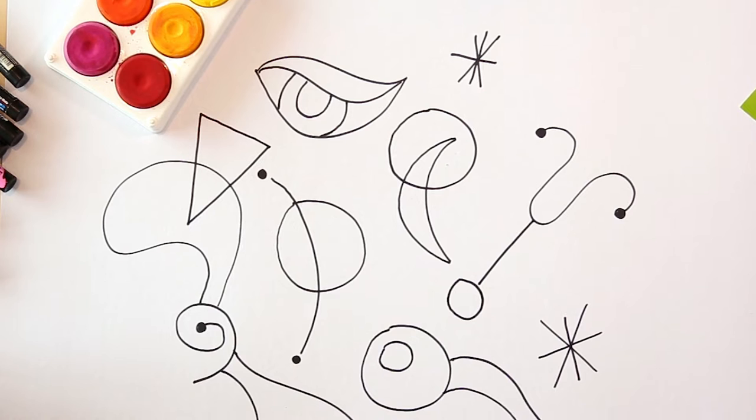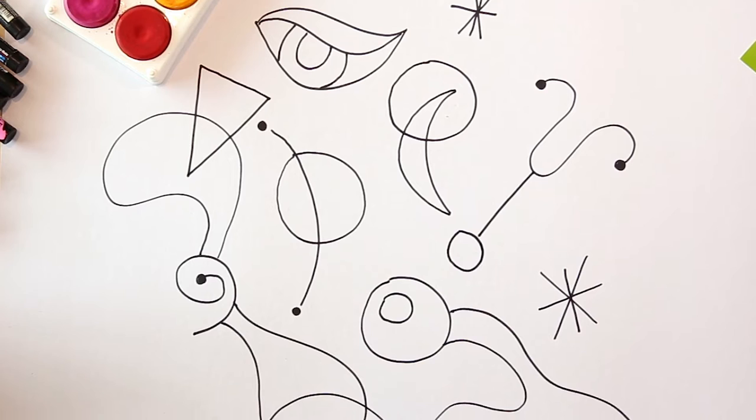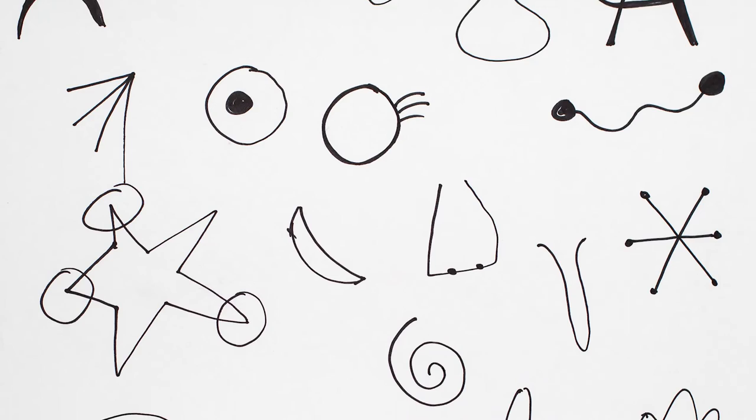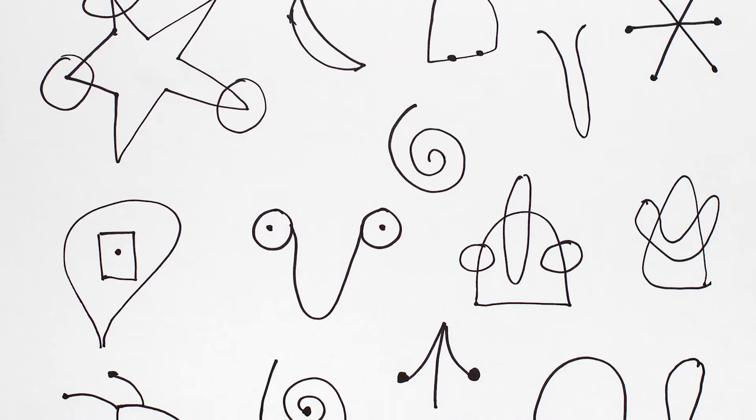So the students have reviewed Miro's work, they've made their symbols, chosen their best or favorite one, and from that point I've been able to make a symbol sheet which can be hung up or photocopied smaller for the table. The students have all contributed so it's student-based and we've got lots of little symbols here to work with.